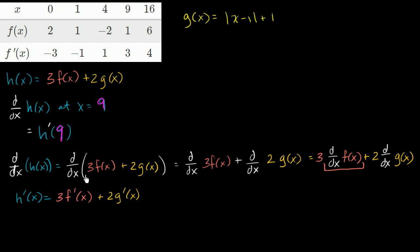Once you're more fluent with these properties — the derivative of a sum is the sum of the derivatives, and the derivative of a scalar times something is the scalar times the derivative — you could go straight to this result quickly. Now we can evaluate this when x equals 9: h prime of 9 equals 3 times f prime of 9 plus 2 times g prime of 9.